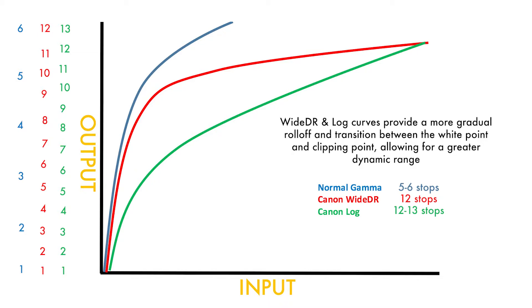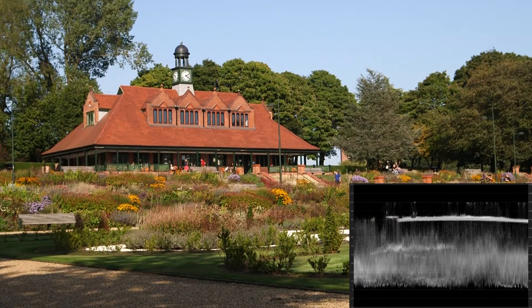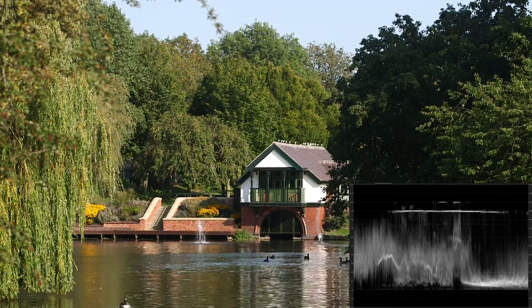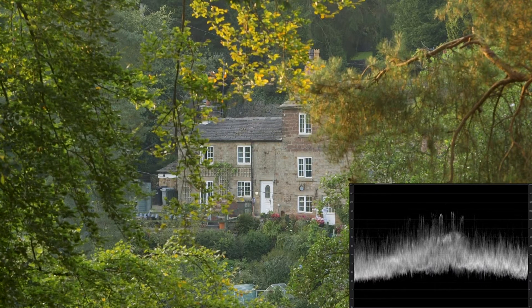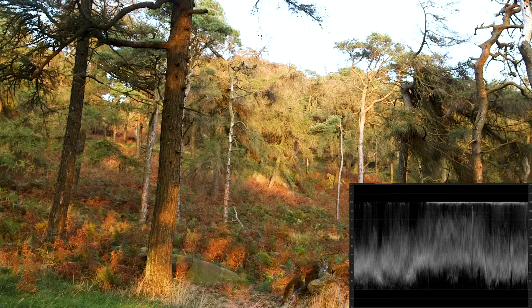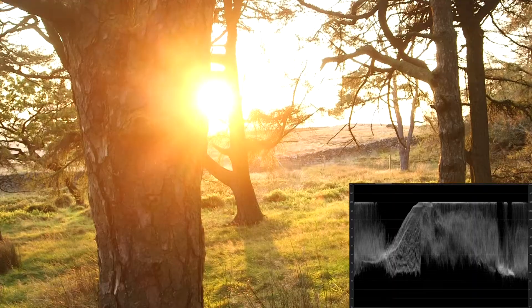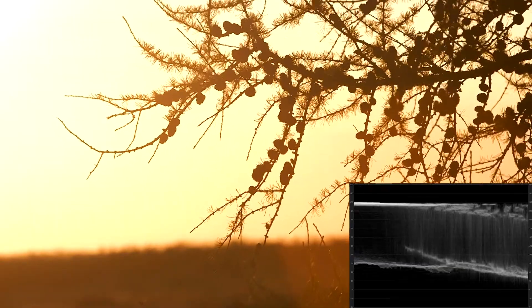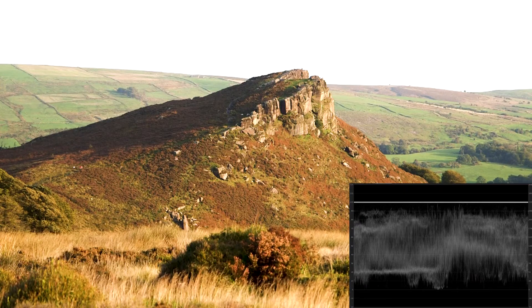Picture profiles basically mean the look the camera is giving the image. This is determined by something called a gamma curve, which changes the saturation, contrast, and dynamic range of an image. A standard picture profile generally has a very limited dynamic range of around 5 to 6 stops. This is fine to use when there's even lighting, however in high contrast situations — when there's a lot of bright areas and dark areas in the frame at the same time — it becomes very difficult to hold all of that detail.